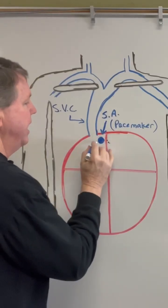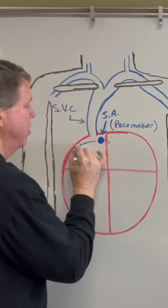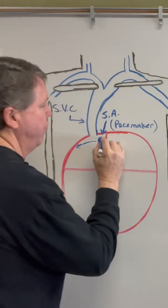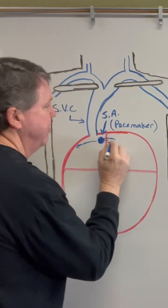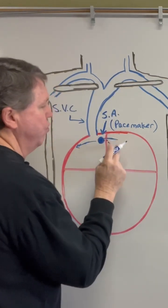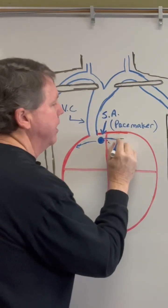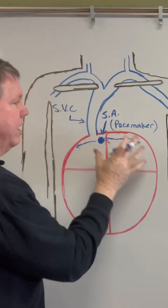It sends an impulse out through nerves that go out to these atria right here. The nerves coming out this way are actually called Bachmann's bundle, and they're going to go out to here and cause the heart to contract.